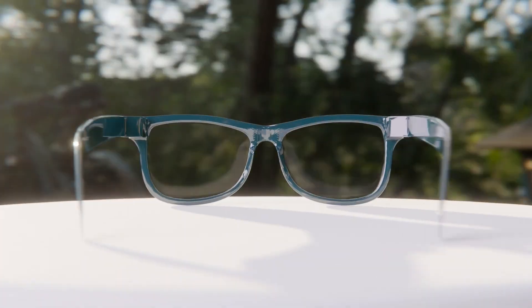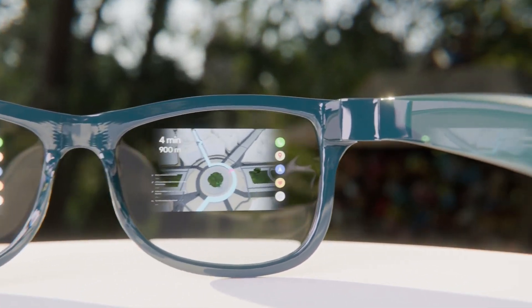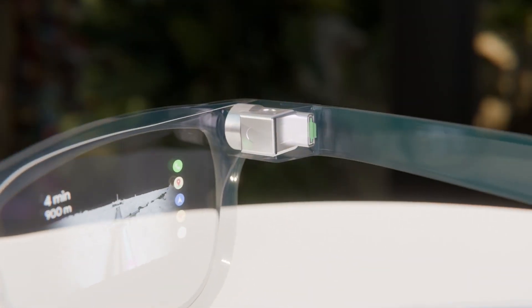The displays of smart glasses consist of two key elements: a light engine for image creation and a combiner for blending images with the real world.